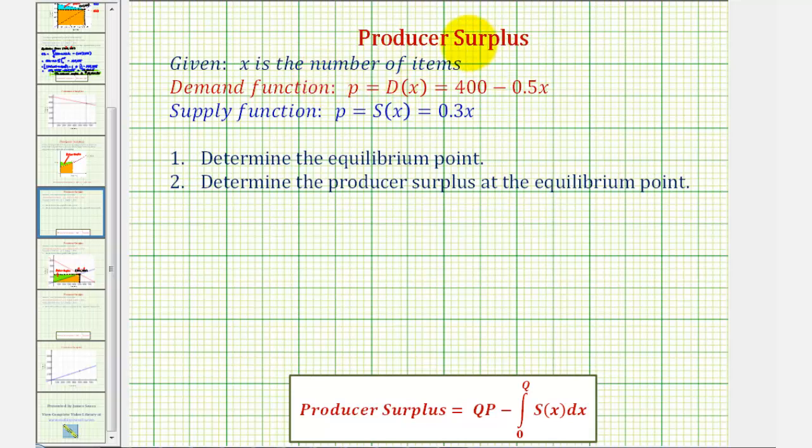Welcome to an example of producer's surplus. We're given that x is the number of items, the demand function is d of x, and the supply function is s of x. Number one, we want to determine the equilibrium point, and then number two, determine the producer's surplus at the equilibrium point.